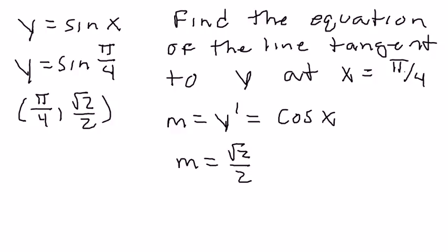And so, the equation of my line tangent to my graph would be y minus the square root of 2 over 2 equals the square root of the slope, square root of 2 over 2 times x minus pi over 4.